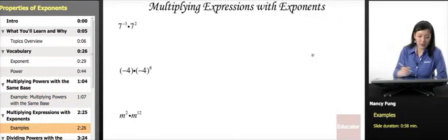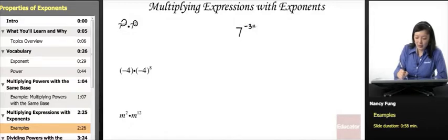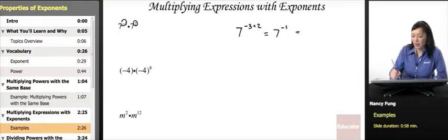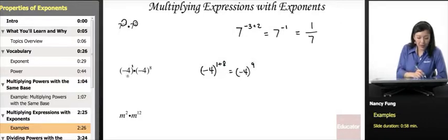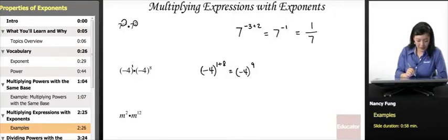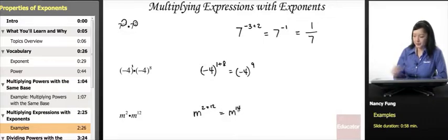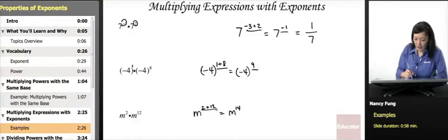Let's try multiplying expressions with exponents. Keep the base the same and add the exponents: 7 to the negative 3 times 7 to the 2nd gives negative 3 plus 2, which equals 7 to the negative 1, or equivalently 1 over 7. Next, there's an imaginary exponent of 1, so negative 4 to the 1st times negative 4 to the 8th gives negative 4 to the 9th — be careful that the negative sign stays inside the parentheses. With a variable, m to the 2nd times m to the 12th equals m to the 14th.